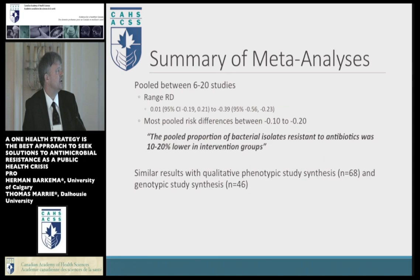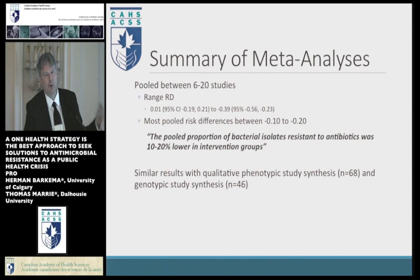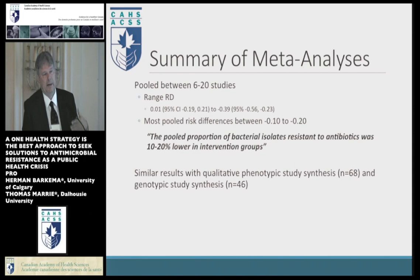So there is a 22% reduction in resistance on the animal side. We pooled many studies, put them in different groups — that example was enterococci and glycopeptides. We did it for all kinds of different groups, and in general, looking at all the meta-analyses, there was a 10 to 20% lower resistance in the intervention groups. We also looked at the genetic part, because phenotypic AMR is one side; the other is what happens with the genes. On that side as well, we saw quite a reduction.